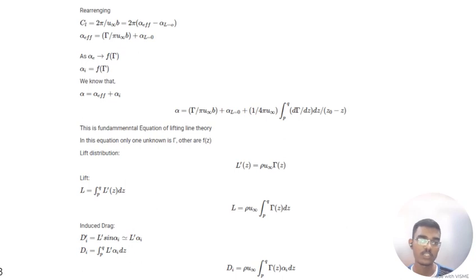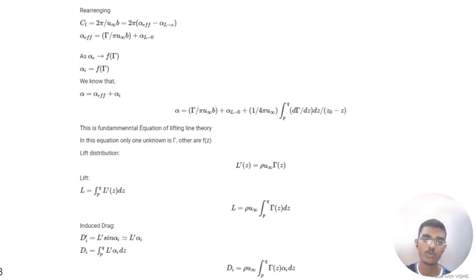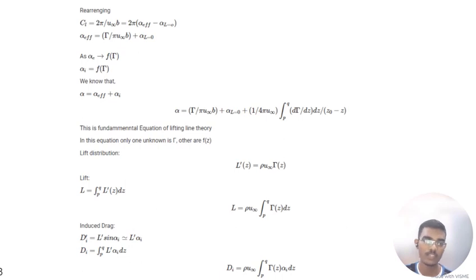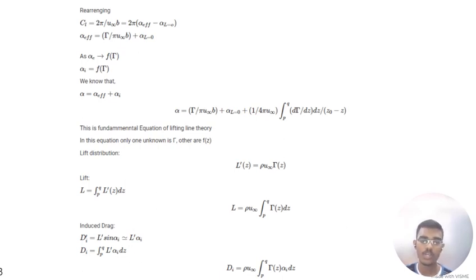For the lift distribution, lift of z equals rho times U-infinity times gamma of z. From this we can calculate the total lift as rho times U-infinity integrated from p to q of gamma(z) dz. The induced drag is D-i equals rho times U-infinity integrated from p to q of gamma(z) times alpha-i dz.